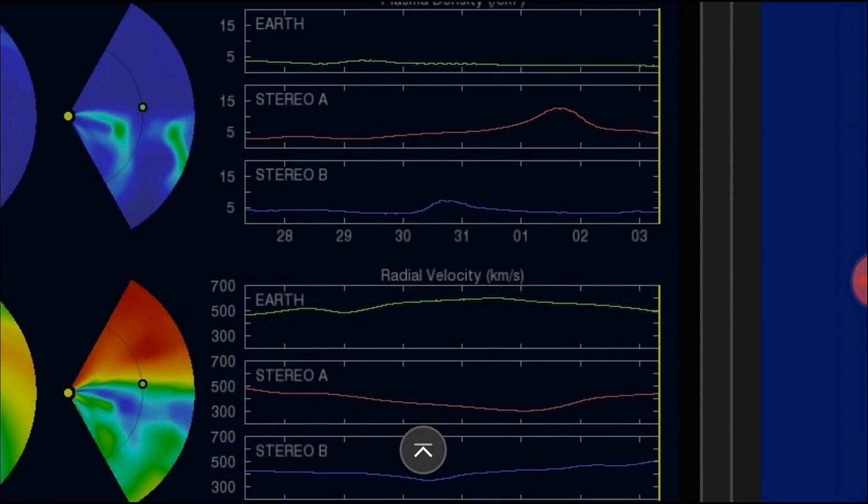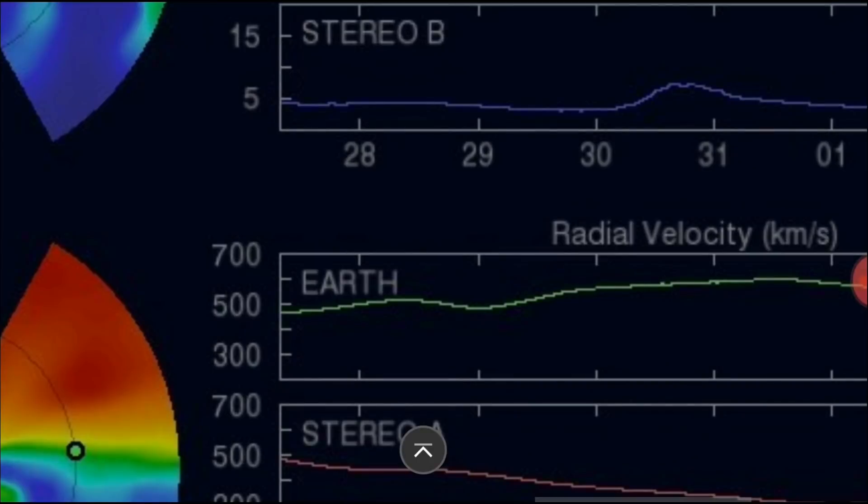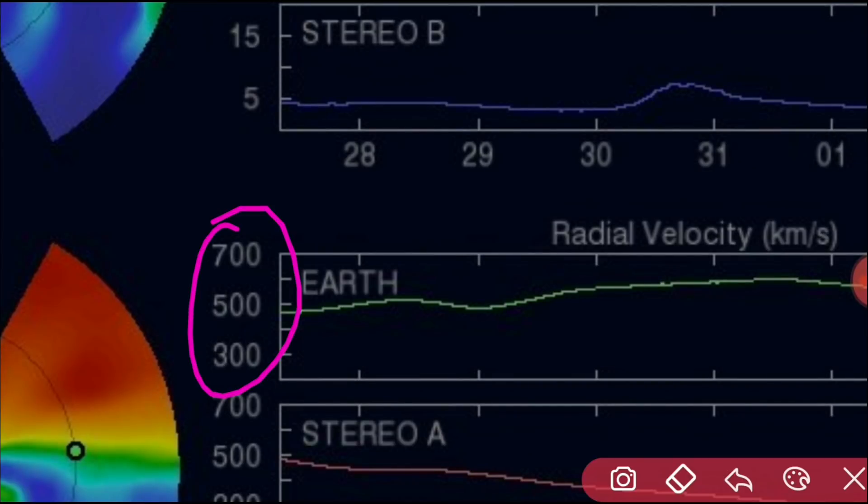That's significant because that's usually about the time we draw the line of what's normal and what's above normal conditions. Anything over 500 typically will give us some action.